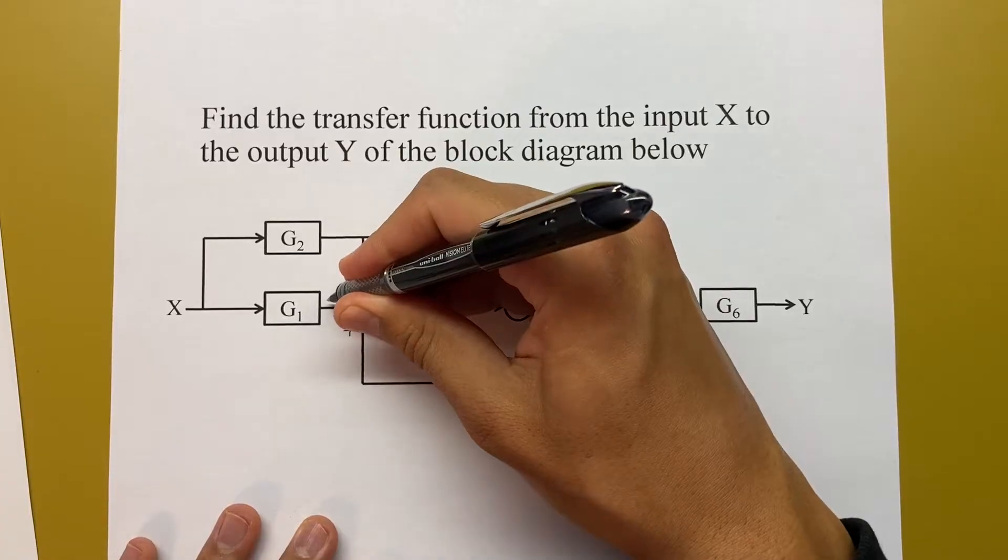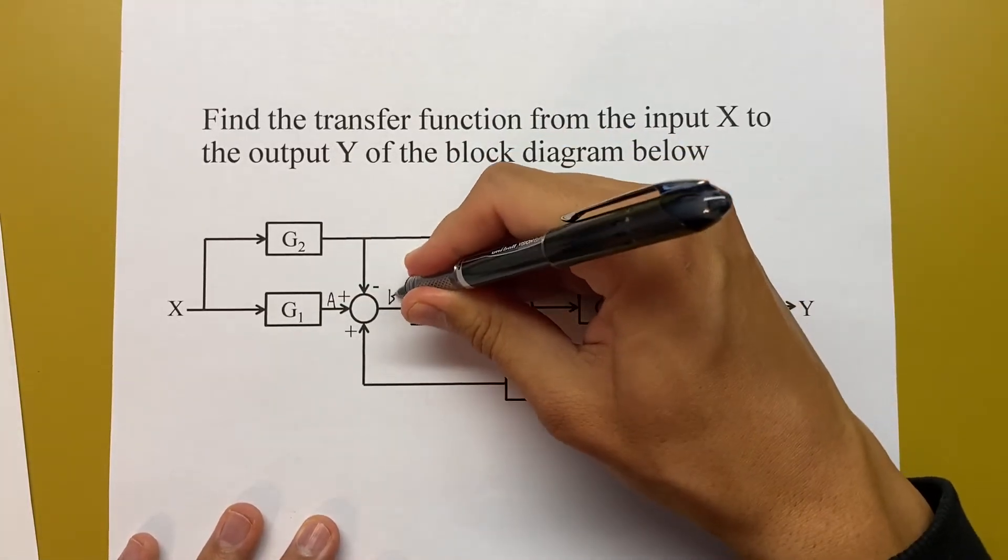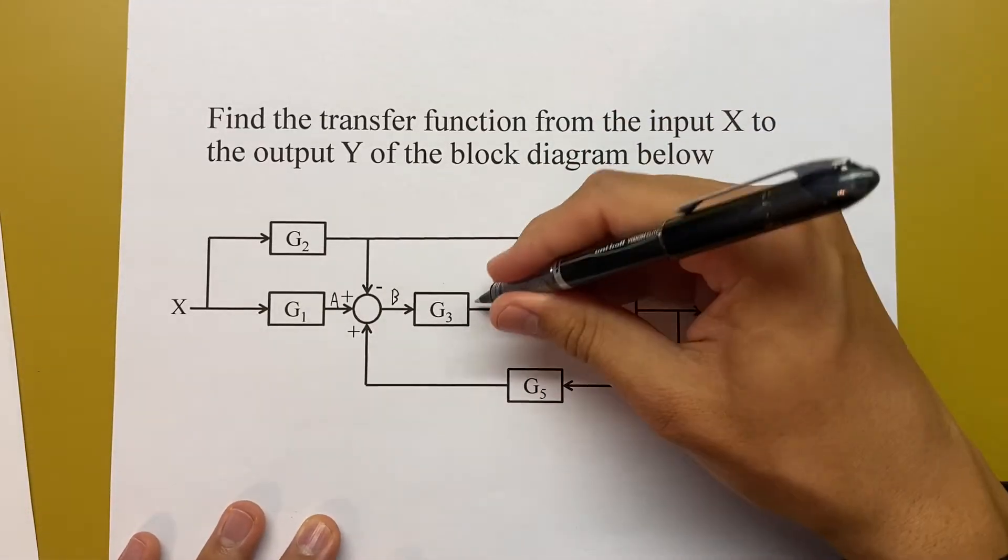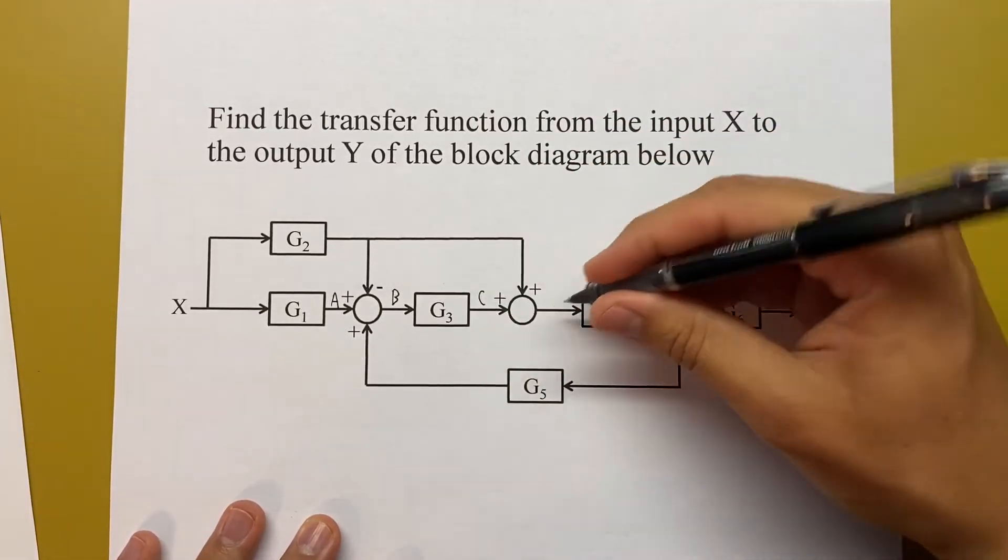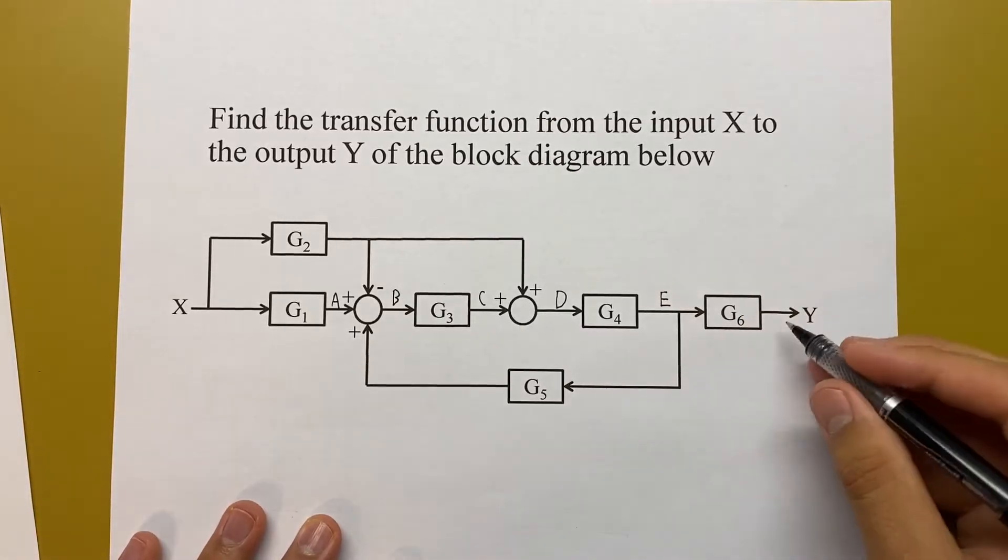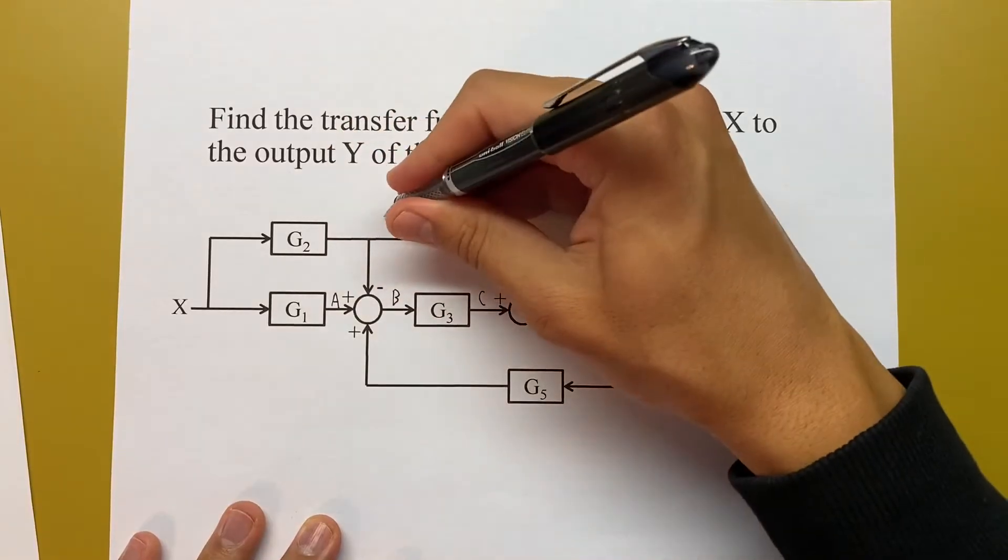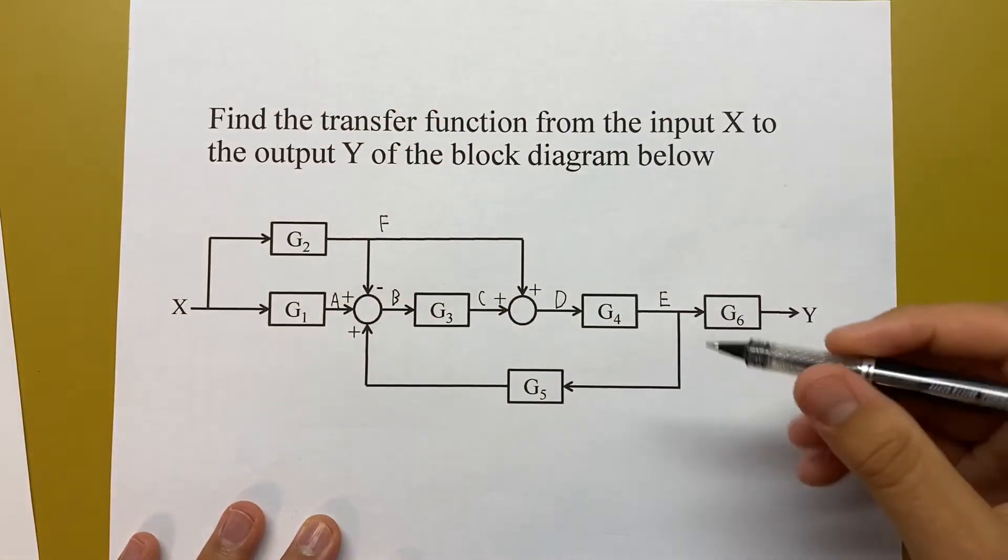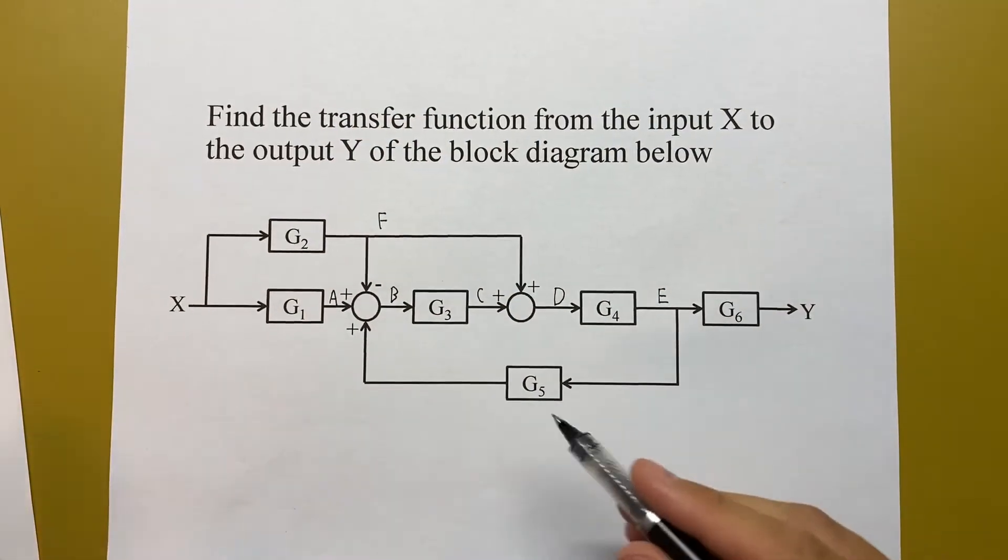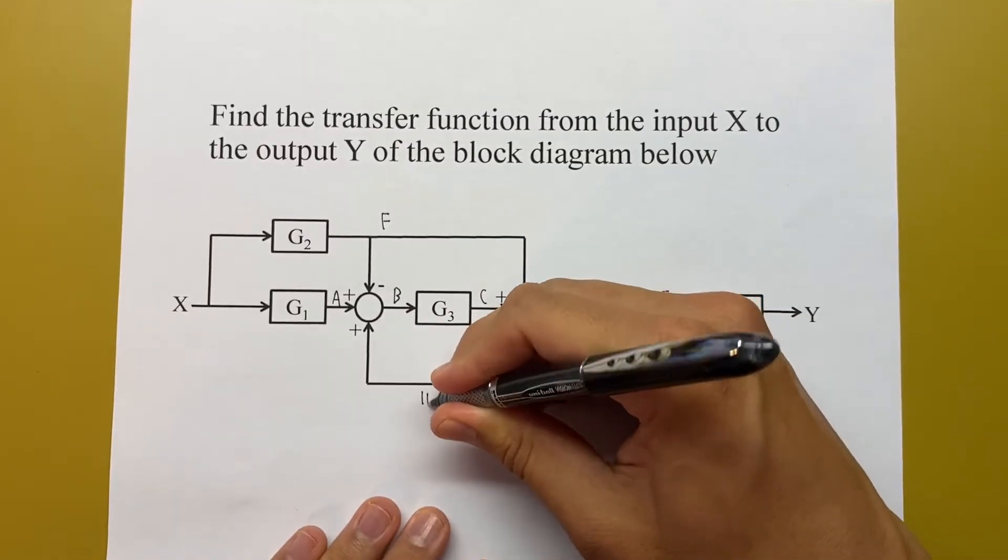I'm going to call this signal right here A coming out of G1, this one B coming out of that summing junction, C after G3, D here, E here, this one's already called Y, I'm going to call this up here F, and then the next letter is G, but we already have all these G's, so I'm going to call this feedback signal H.